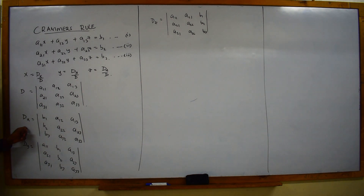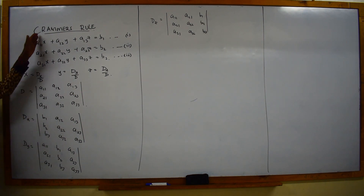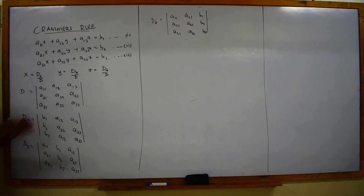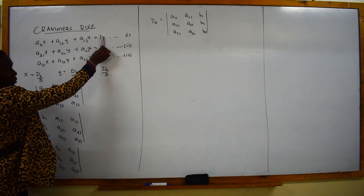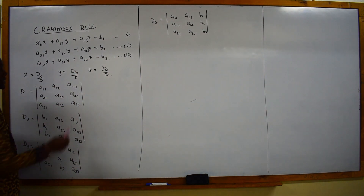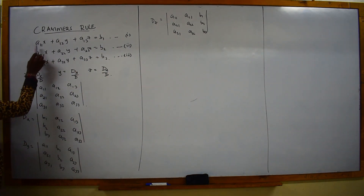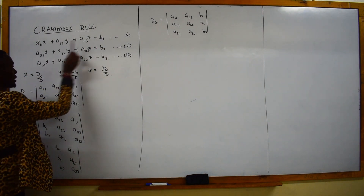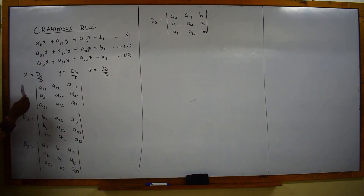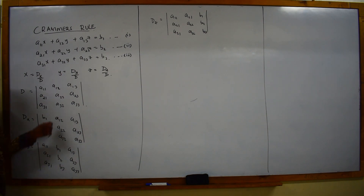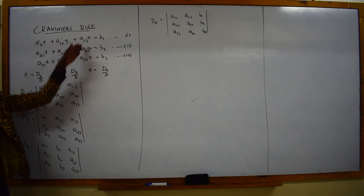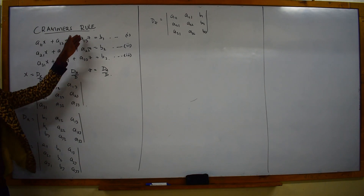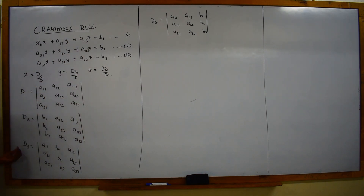Then you come to our Dx. In Cramer's rule, where you have the constant values of x, you replace them with the constant terms on the right hand side. So where you have a11, a21, and a31, the Dx is found by replacing these terms with b1, b2, and b3. Then the terms of y and z remain.